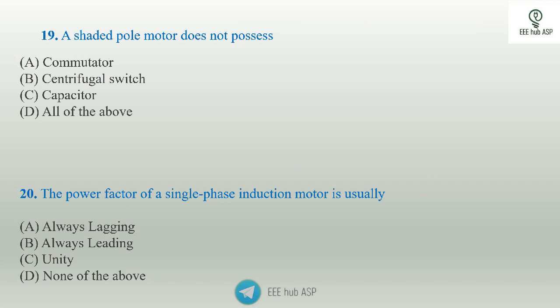Shaded pole motor: it has no commutator, no centrifugal switch, and no capacitor. It is the simplest and cheapest single phase motor, used in toys and small devices. There are no moving or switching parts. Answer Option D — all of the above.